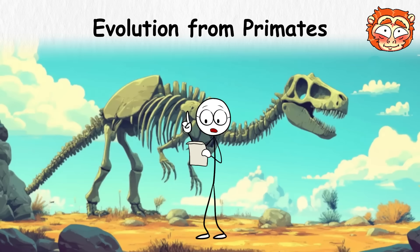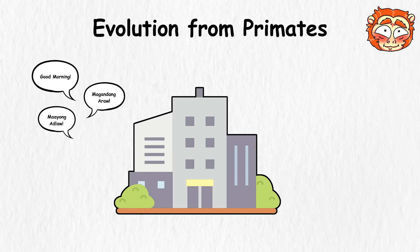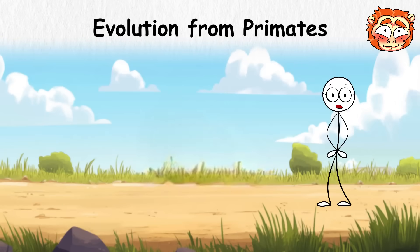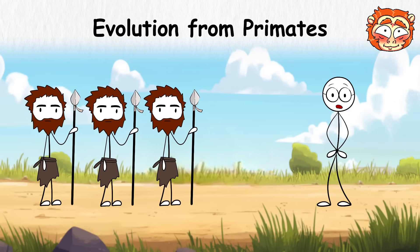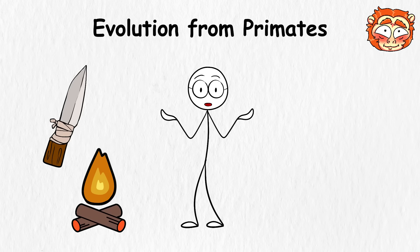Evolution from Primates. If you look at the fossil record, the story it tells is one of slow change. Long before cities, languages, or even pants, there were creatures that looked a lot like apes, just trying not to get eaten. Somewhere along the way, one group began walking upright. That freed up their hands, which led to tools, fire,